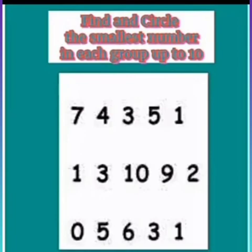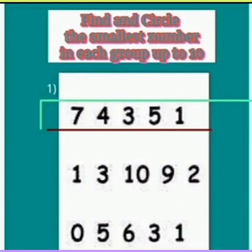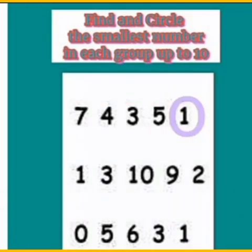Kids, the next worksheet: find and circle the smallest number in each group up to ten. In the first row there are many numbers. Which one is closer to zero? Yes, the number one is closer to zero, so we can say the number one is the smallest number.